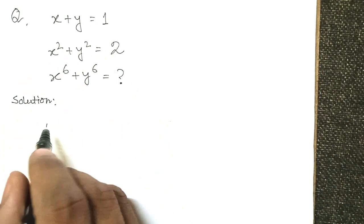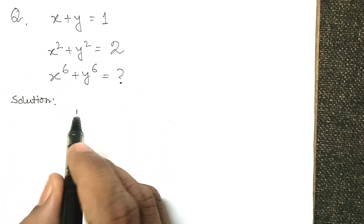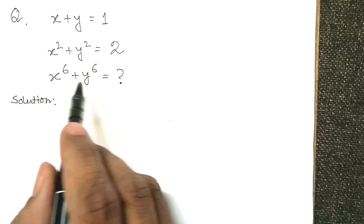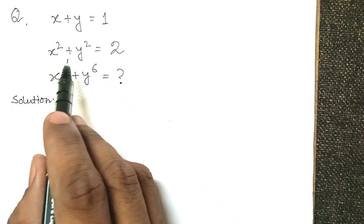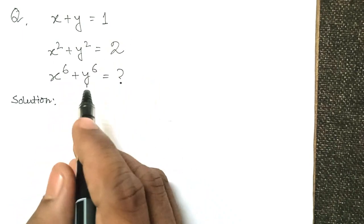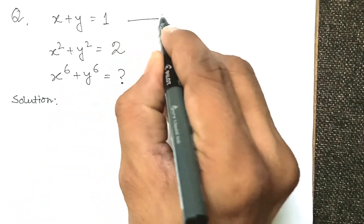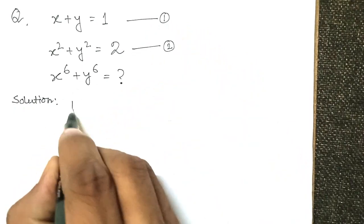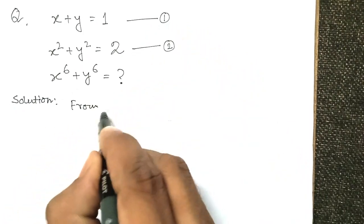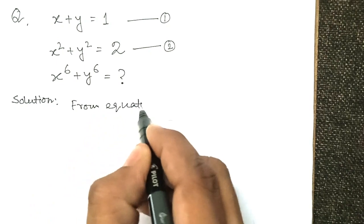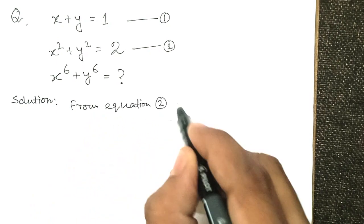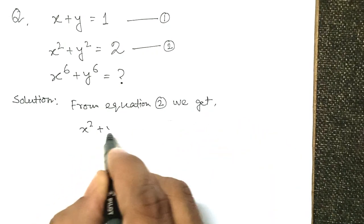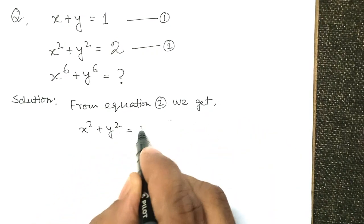Today's problem is to find the value of x to the power 6 plus y to the power 6. First we will find the value of xy. We are given two equations — equation 1 and equation 2. From equation 2, we get x squared plus y squared equals 2.